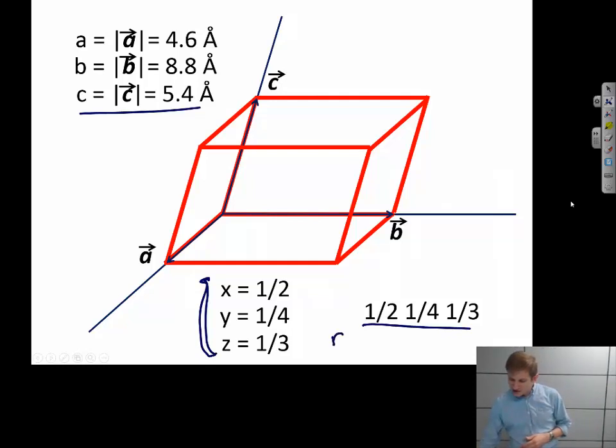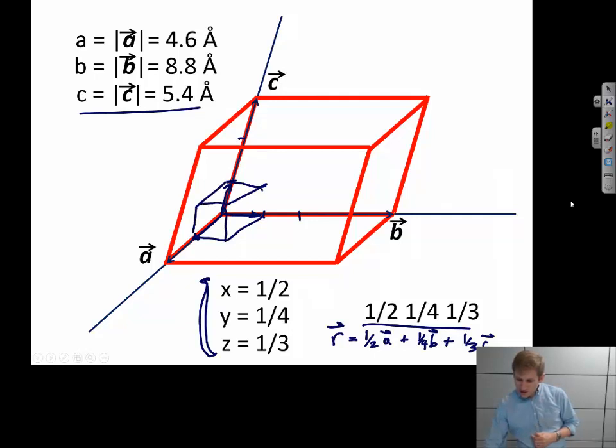Now remember, what this means is you have some vector. And this vector describes the position of the atom or whatever we're situating in the lattice in terms of the three principal vectors. So we are going to look at one-half of A, one-quarter of B, and one-third of C. And this is going to describe the location of this position within the lattice. So that position is sitting right about here.